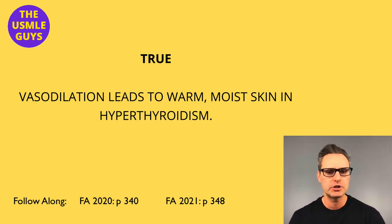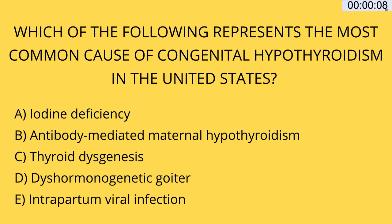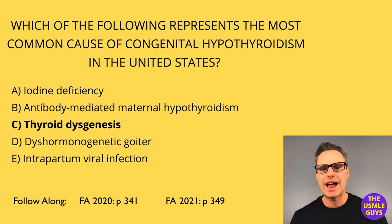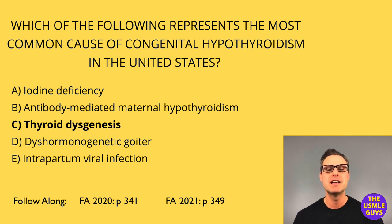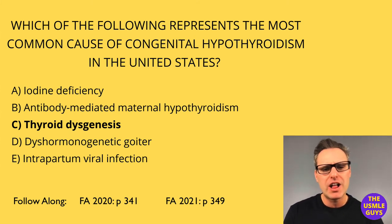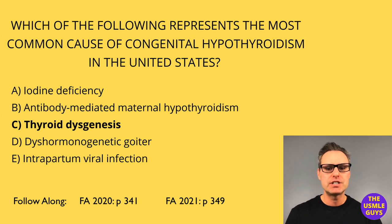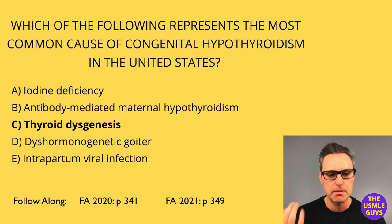Let's jump into our next question — as always, pause and come on back when you think you've got the right answer. The answer here is C, thyroid dysgenesis. In the United States, the most common cause of congenital hypothyroidism is thyroid dysgenesis.